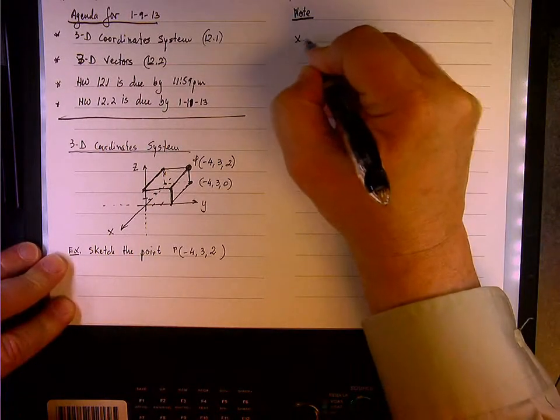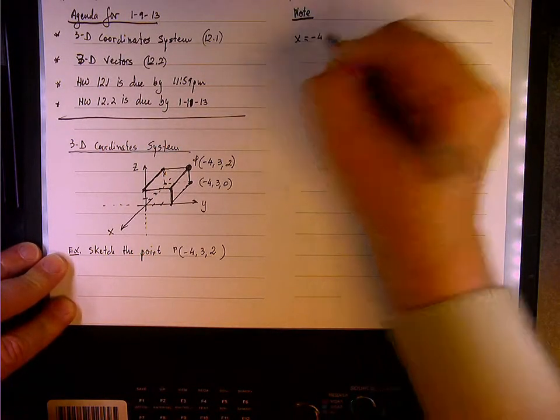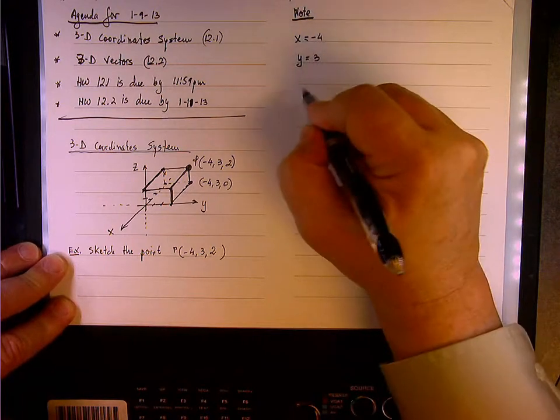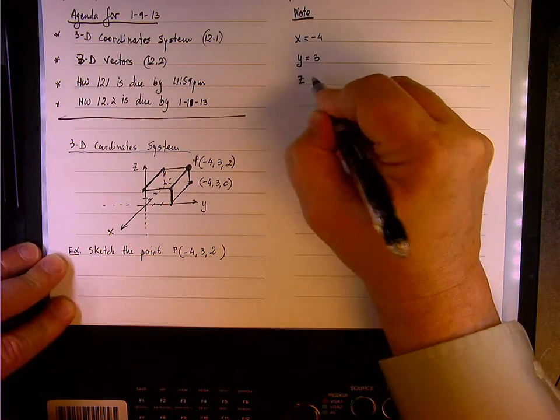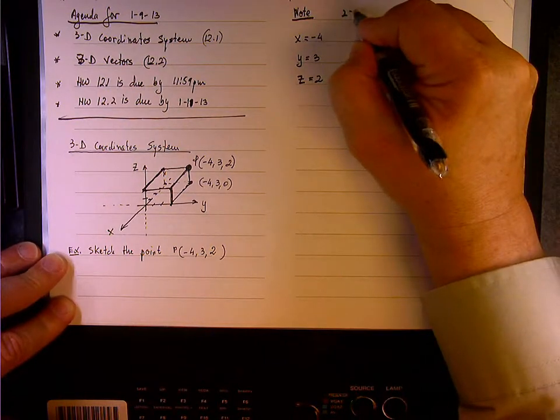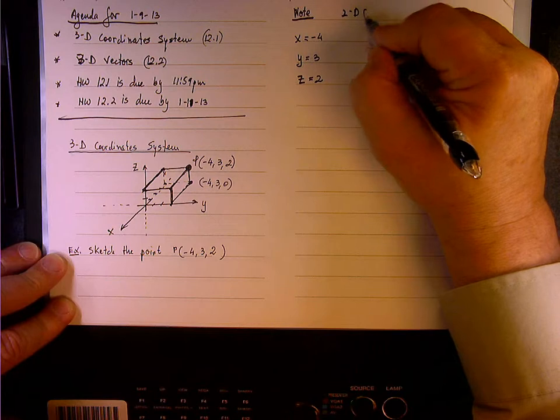If we look at x equals negative 4, and if we look at y equals 3, and if we look at z equals 2. And on a two-dimensional universe where we have xy,